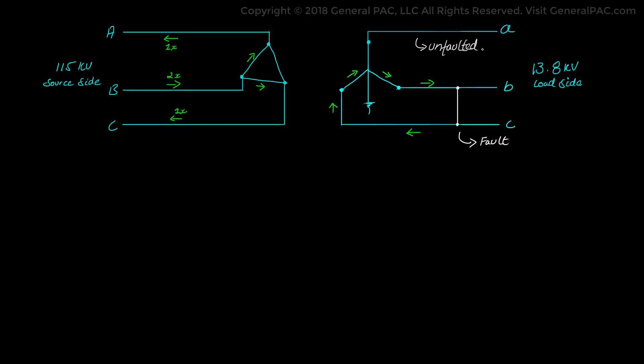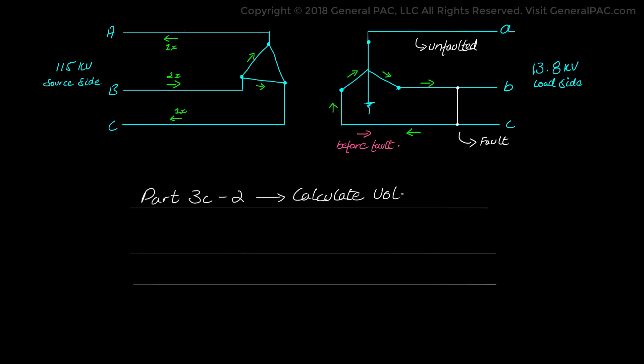Phase B and C current quantities are the faulted phase and they should be the same magnitude but opposite in direction which is evident by the hand calculations. This matches well with the diagram that we drew earlier. Now for part 3C-2 we will calculate the voltage quantities for a phase to phase fault.